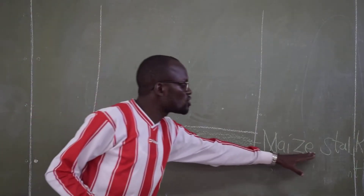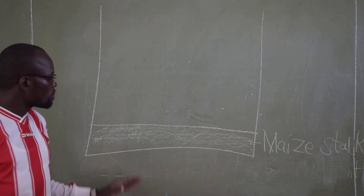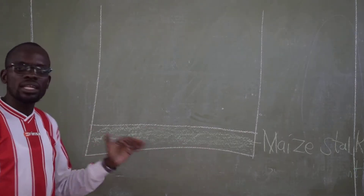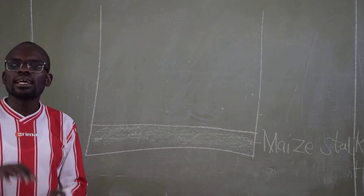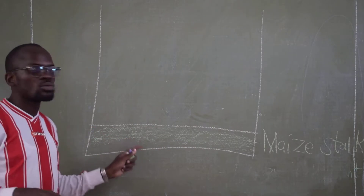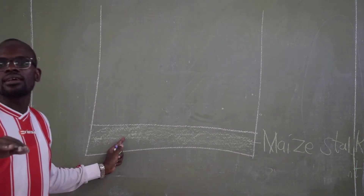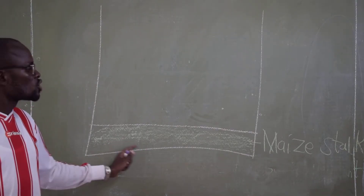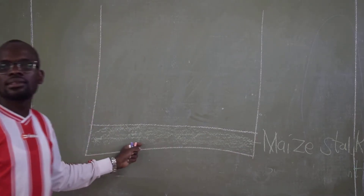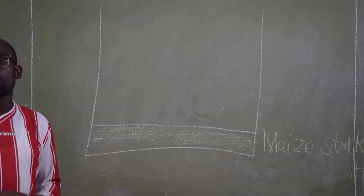Why do we need this base? Just to provide a soft landing for the materials that we are going to use. In this base we need something very hard, like the stalk of a maize plant.